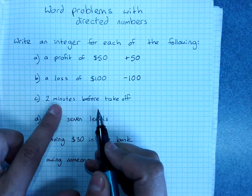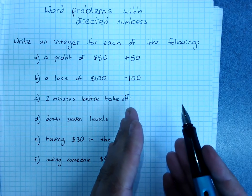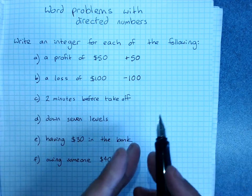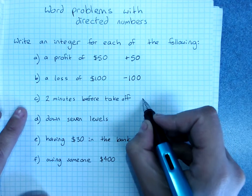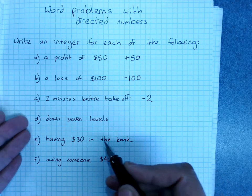Two minutes before takeoff. We've got before takeoff and after takeoff. Since we go from before to after, before takeoff could be negative 2, whereas after takeoff might be positive.